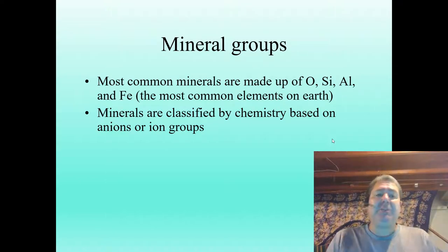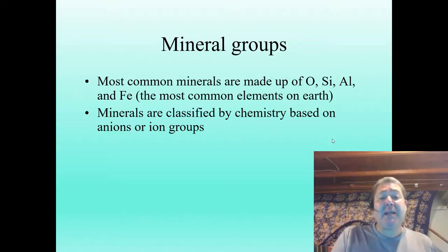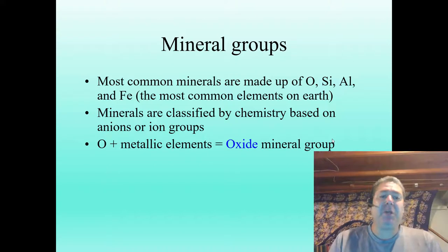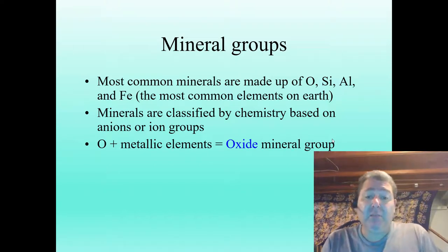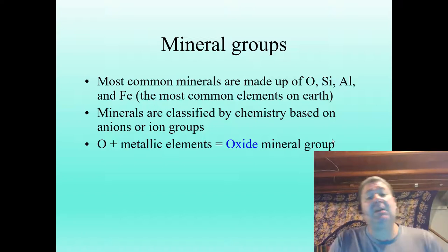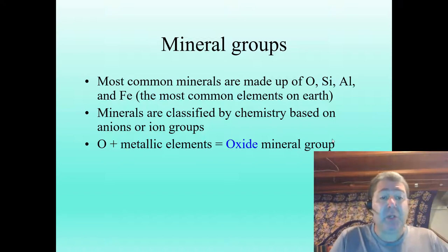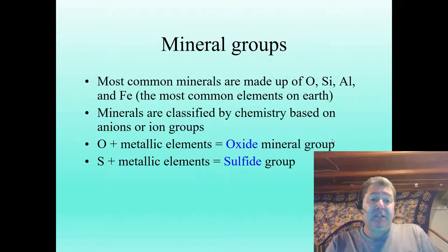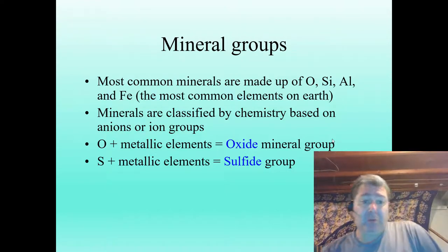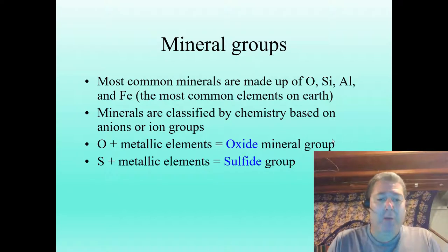Minerals are classified based on the chemistry of their anion or ionic groups. We have the oxide mineral group — oxygen plus a metallic element, so iron plus oxygen makes iron oxides. Then there's the sulfide group — sulfur plus a metallic element, like copper sulfide or lead sulfide. Both oxides and sulfides are common ore minerals.